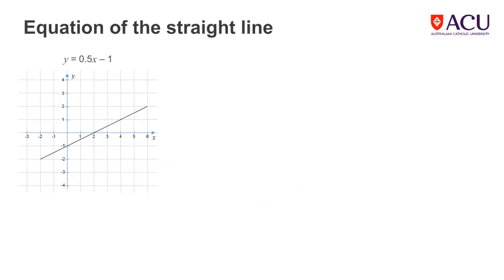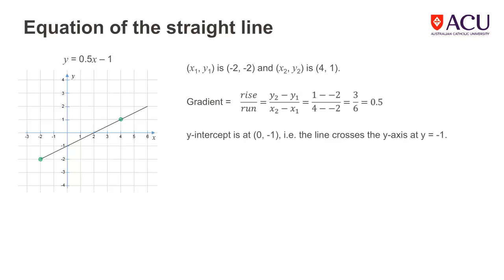Here we have a graph of the equation y equals 0.5x minus 1. By choosing two points on the line, the gradient can be worked out to be 0.5. We can see that this is the value of the coefficient of the x in the equation. Also, the y-intercept is at 0, negative 1. That is, the line crosses the y-axis at negative 1, which is the same as the constant term in the equation.